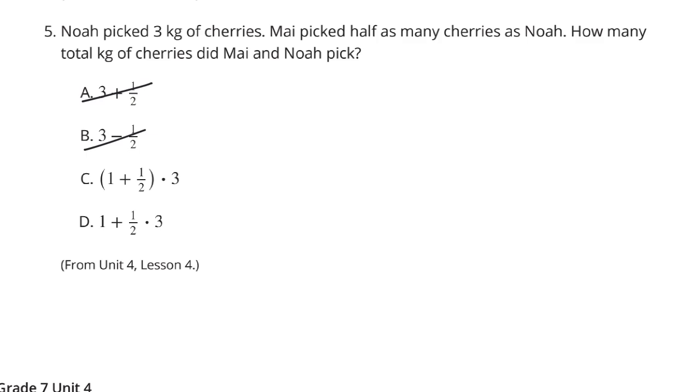Well, the 3 is Noah's, right? And, then we have the 1 plus the 1 half. When we truly think about it, when we take that 1 plus the 1 half and multiply it by 3, the 1 is Noah's. The half represents Mai's.